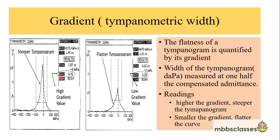The next parameter is the gradient, or tympanometric width, which describes the relationship between the height and width of the graph — essentially the flatness of the tympanogram, quantified in decapascal measured at one half the compensated admittance. Higher gradient values mean a steeper tympanogram; smaller values mean a flatter curve.